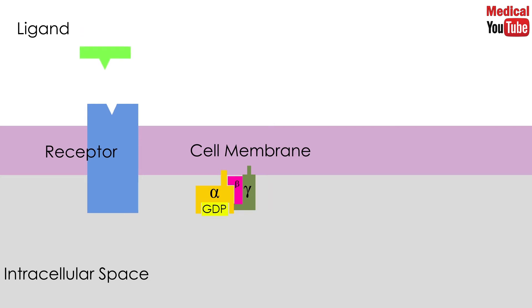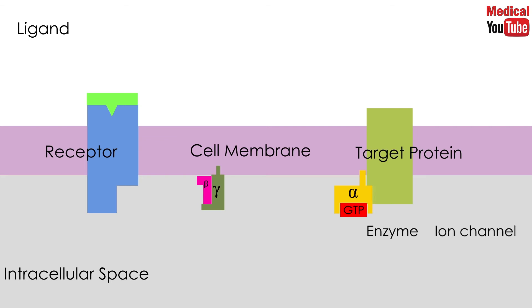When a ligand binds to its binding site on the receptor, the cytoplasmic domain of the receptor is altered. GDP is replaced by GTP, which contains energy. Then the GTP complex migrates to the effector system, which is the target protein that could be an enzyme such as phospholipase C, or it could be an ion channel.